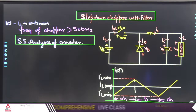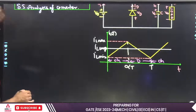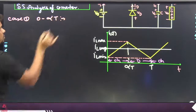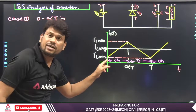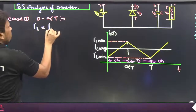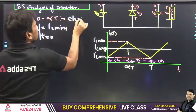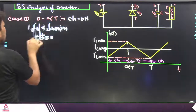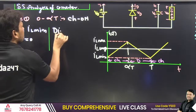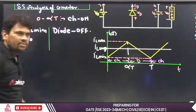Let us take up Case 1. In the range of 0 to αT: the initial inductor current is IL_min, so IL equals IL_min at t = 0. In this range, the chopper is ON. And if the chopper is ON, then confirm — the diode is OFF. So therefore, the diode is OFF.